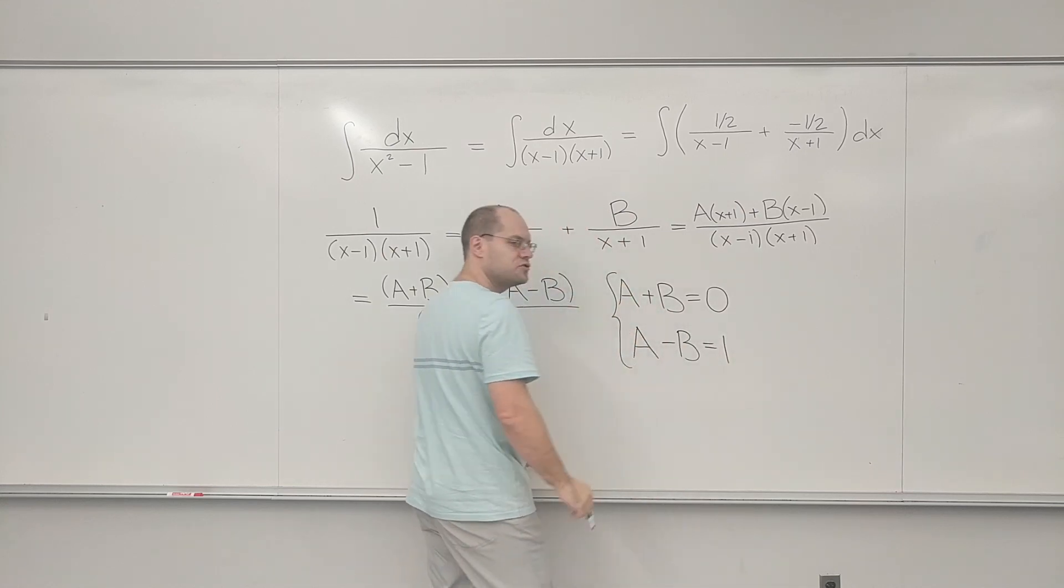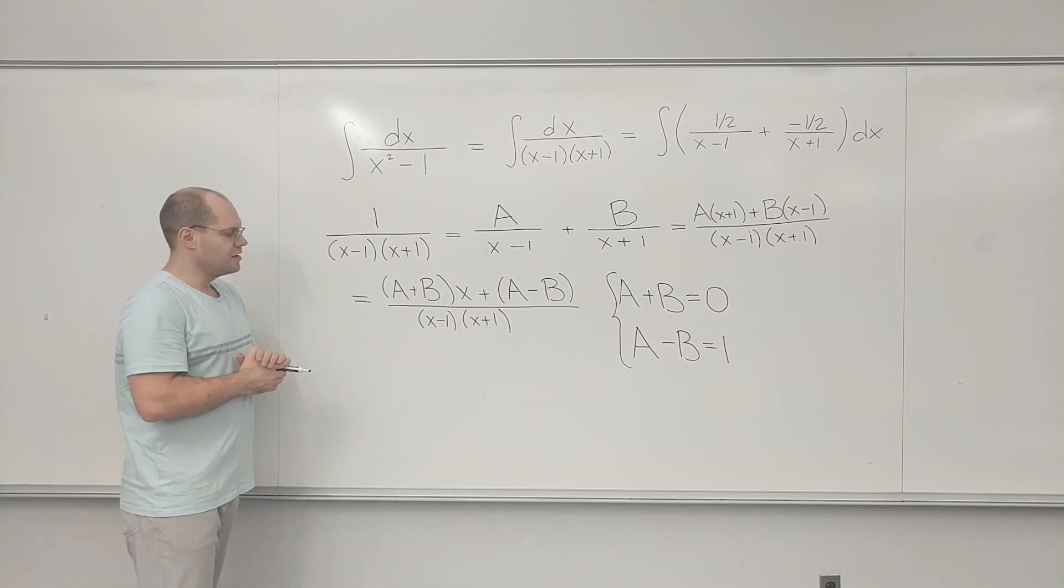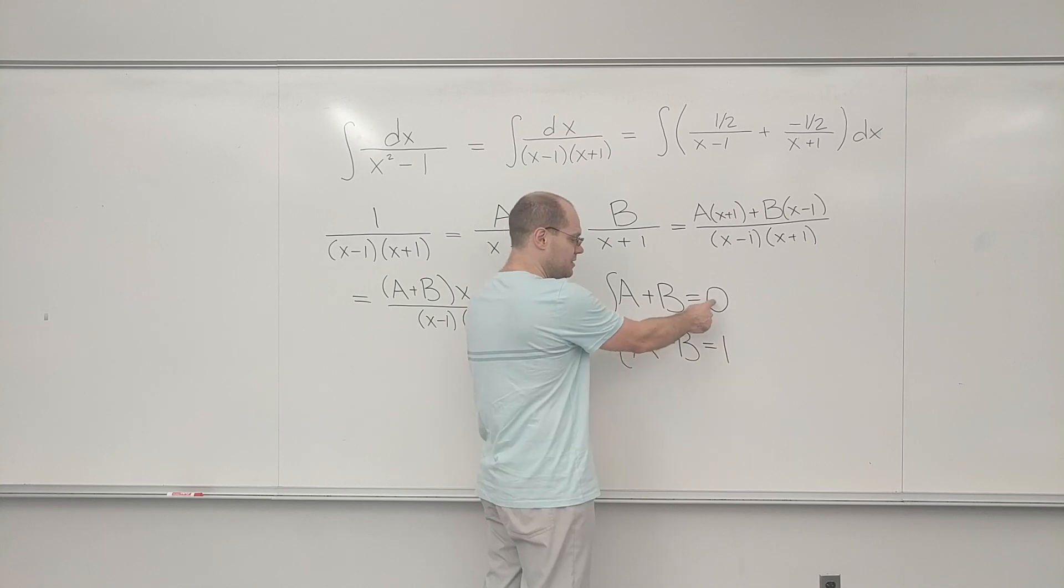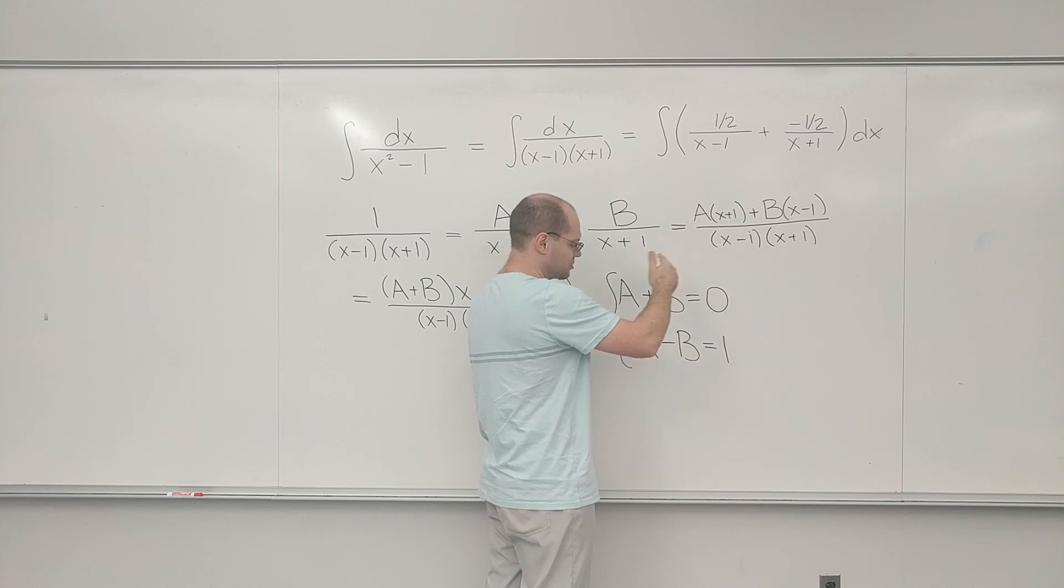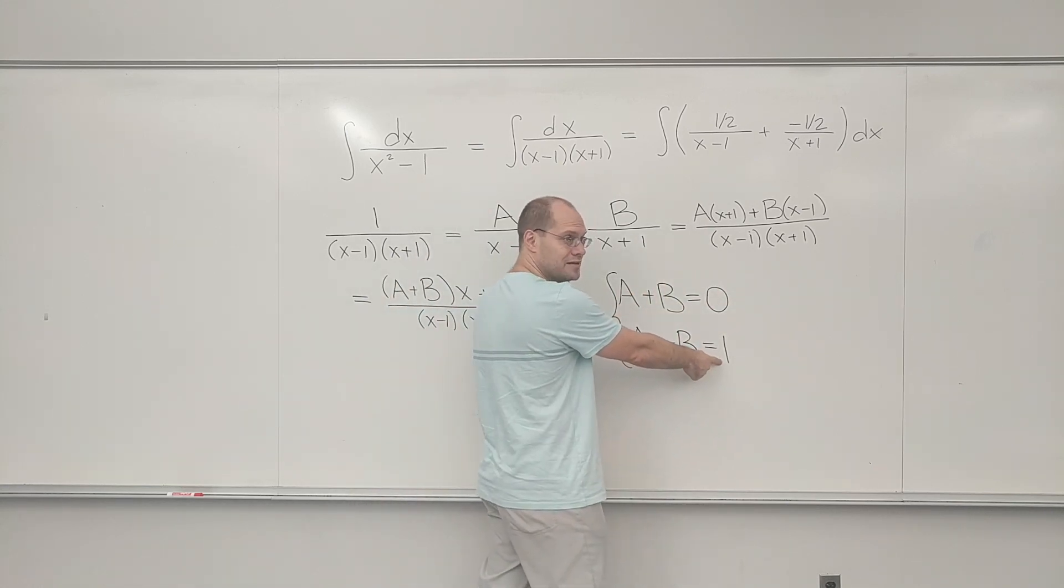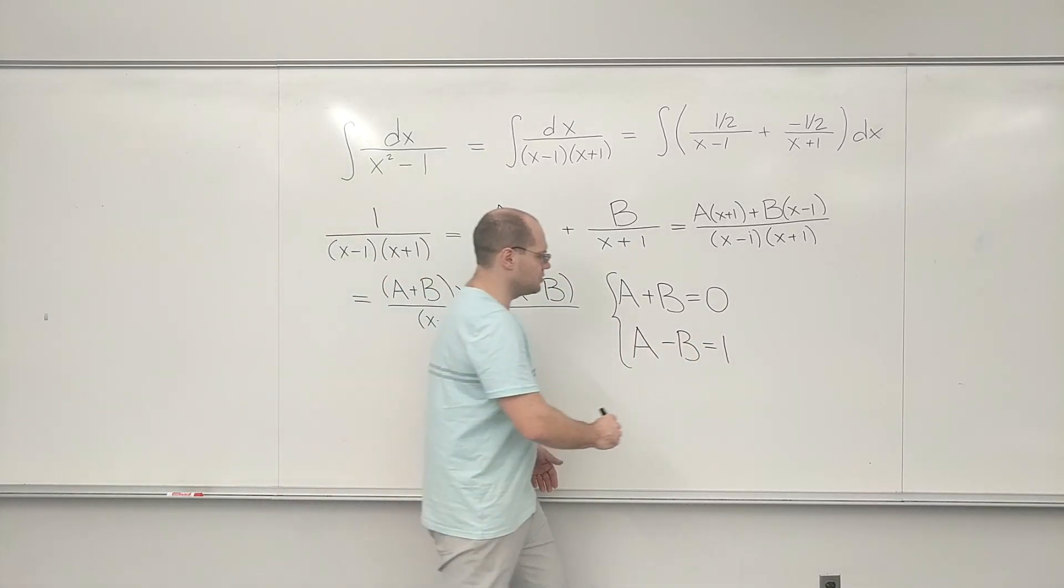And now we have to solve this system with two equations and two unknowns. And in this case, it's easy. The first equation says that a and b must be opposites of each other. So something like one and minus one, two and minus two and so on. And their difference equals one. So they've got to be one half and minus one half. And so a equals one half.